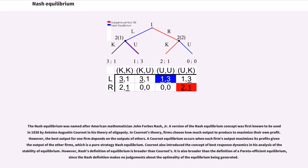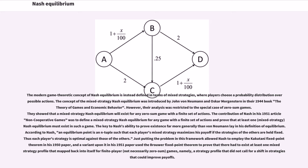Nash's definition is also broader than the definition of a Pareto efficient equilibrium, since the Nash definition makes no judgments about the optimality of the equilibrium being generated. The modern game theoretic concept of Nash Equilibrium is instead defined in terms of mixed strategies, where players choose a probability distribution over possible actions. The concept of the mixed strategy Nash equilibrium was introduced by John von Neumann and Oscar Morgenstern in their 1944 book The Theory of Games and Economic Behavior. However, their analysis was restricted to the special case of zero-sum games. They showed that a mixed strategy Nash equilibrium will exist for any zero-sum game with a finite set of actions.